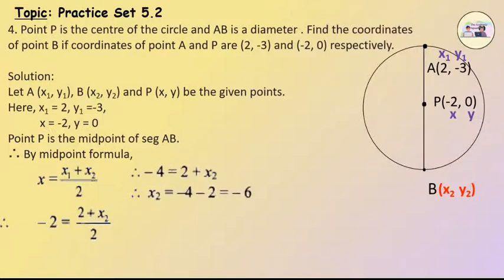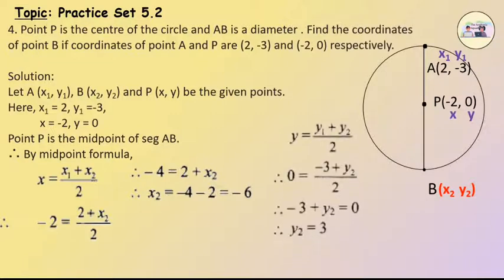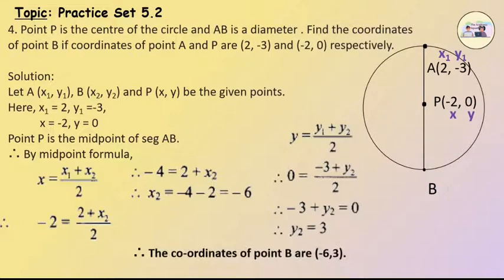Therefore, -4 = 2 + x2. Therefore, x2 = -4 - 2 = -6. y = (-3 + y2)/2. Therefore, 0 = (-3 + y2)/2. Therefore, -3 + y2 = 0. Therefore, y2 = 3. Therefore, the coordinates of point B are (-6, 3).